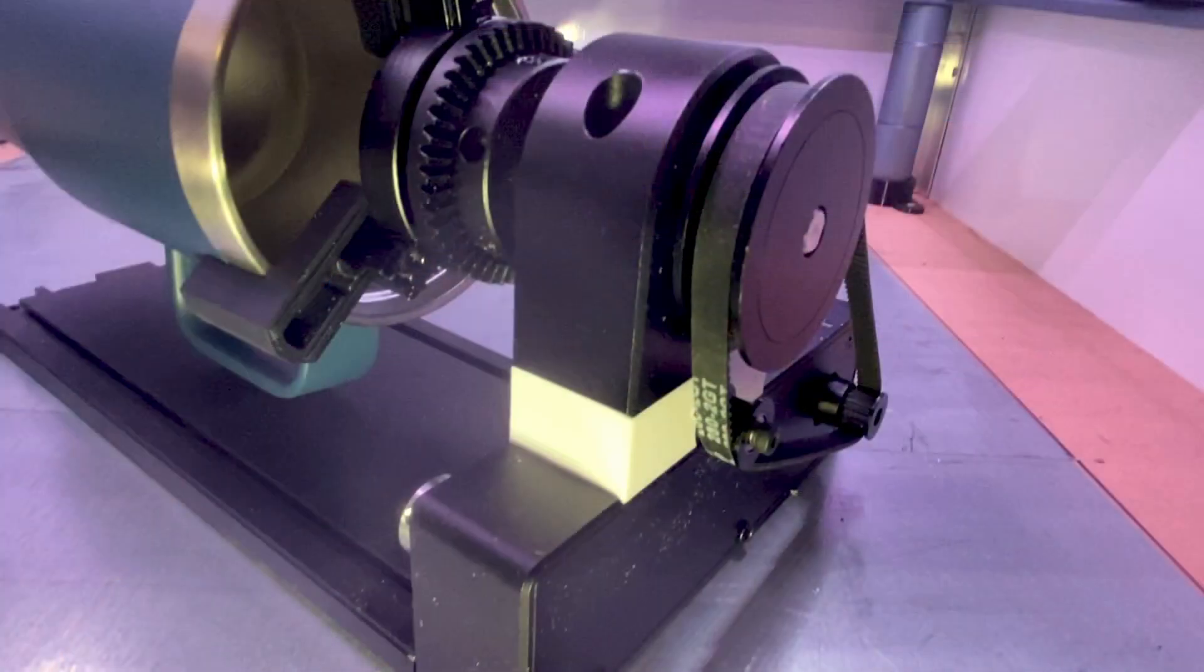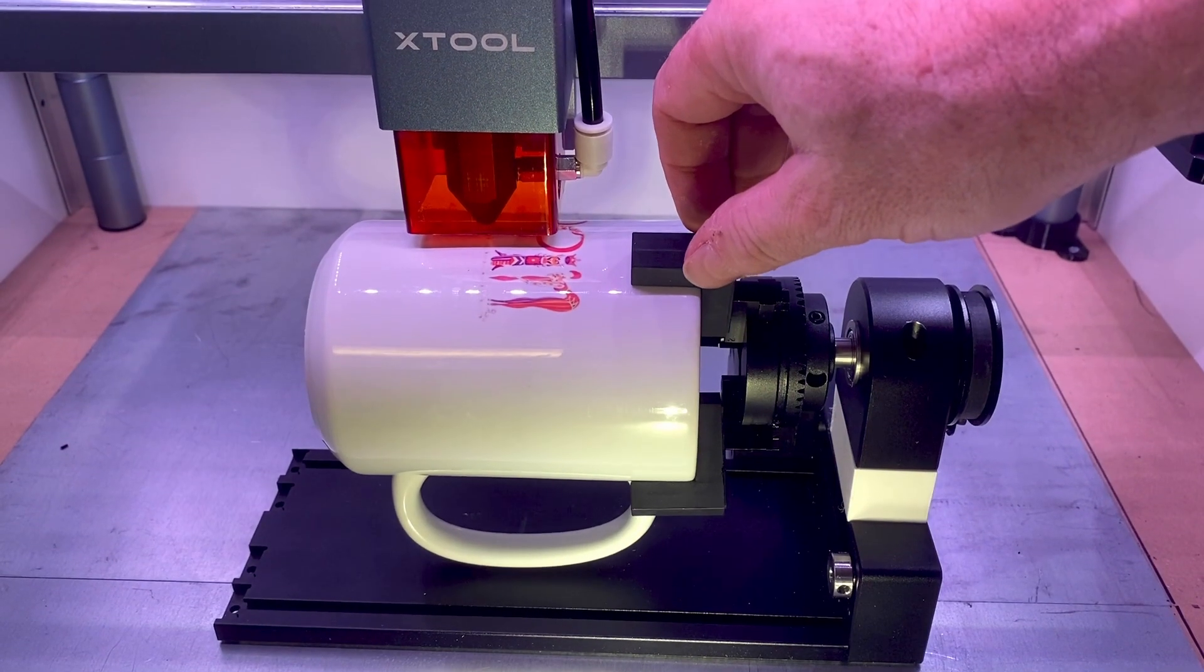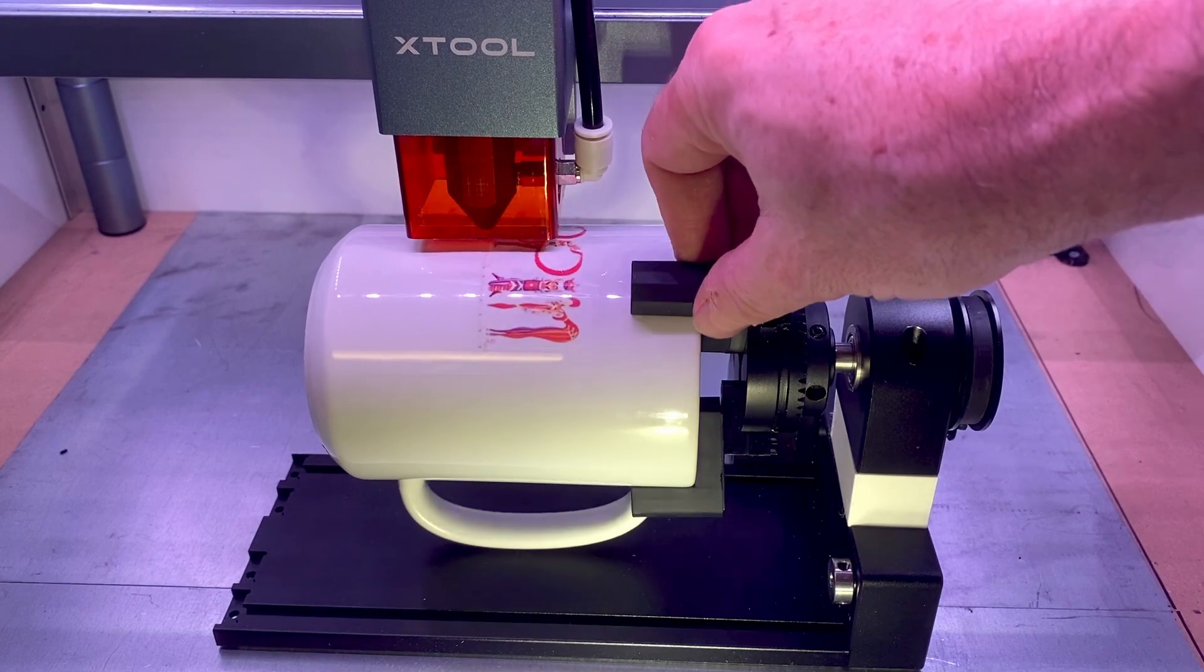The risers use a longer belt, and each riser has an idler pulley to make sure the belt has the correct tension, and screws that don't interfere with the roller belt below the chuck.